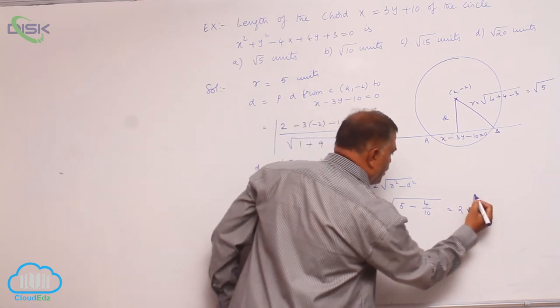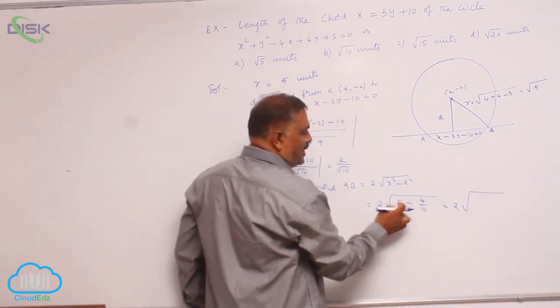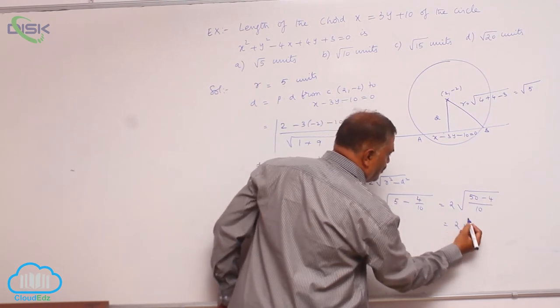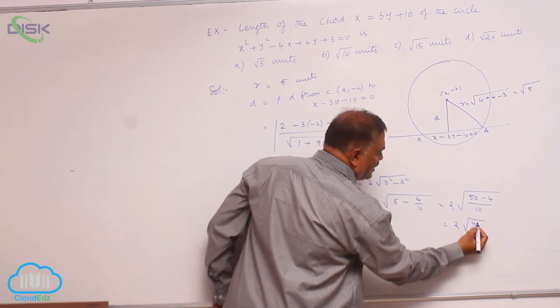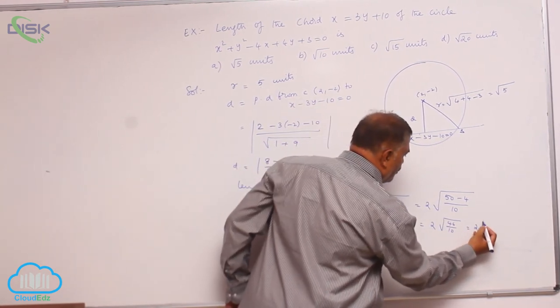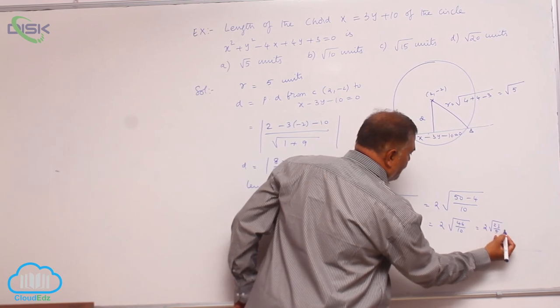That is 2 into root of 50 minus 4 divided by 10. This is 2 into root of 46 by 10. This is 2 into root of 23 by 5 units.